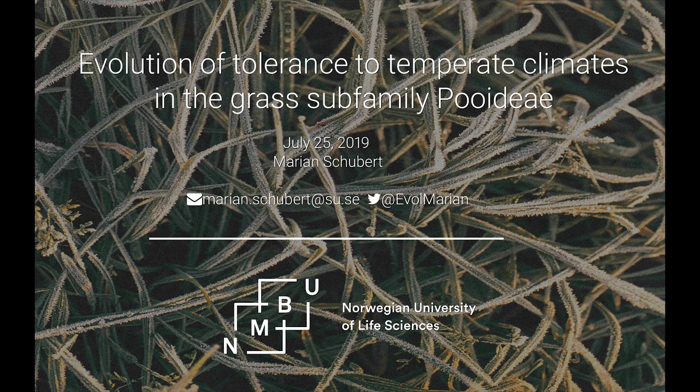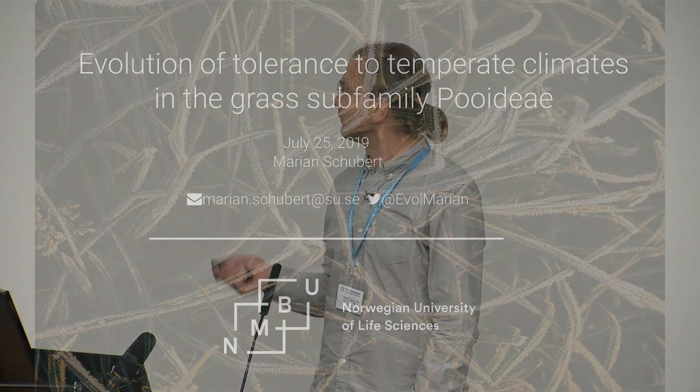I'm Marian Schubert. I'm based at the Norwegian University of Life Sciences, also at Stockholm University, but the topic that I'm going to talk about today is part of my PhD and postdoc that was based at the Norwegian University of Life Sciences. It's the evolution of tolerance to temperate climates in the grass subfamily Poidae.